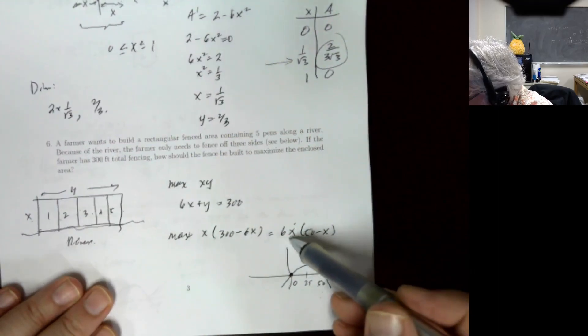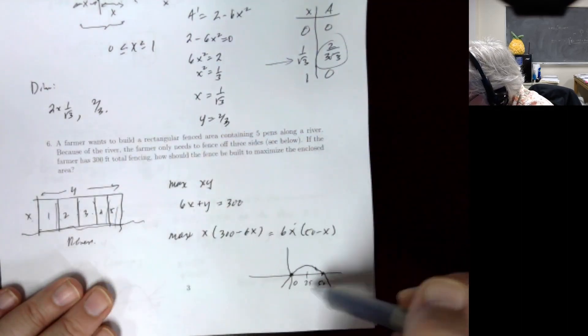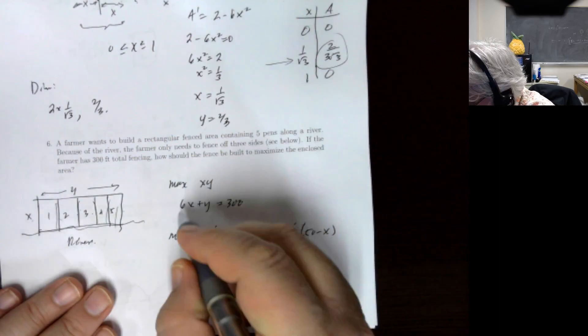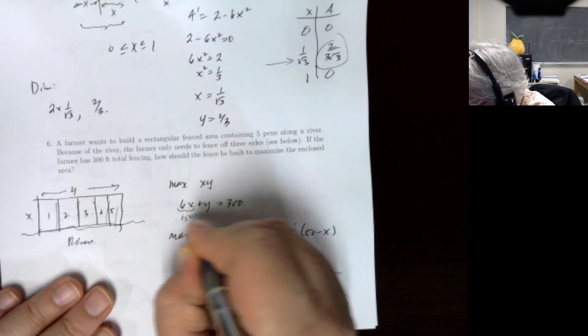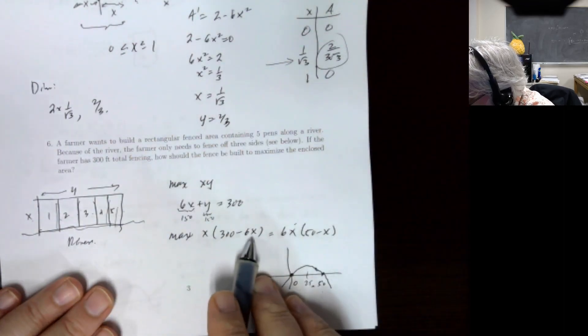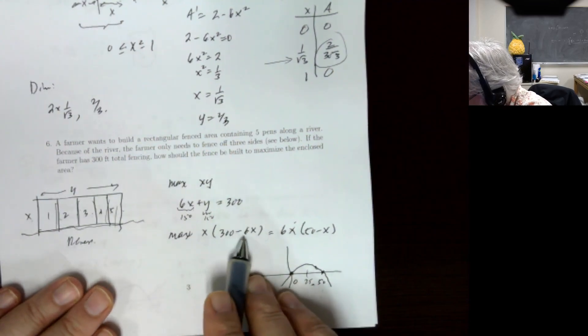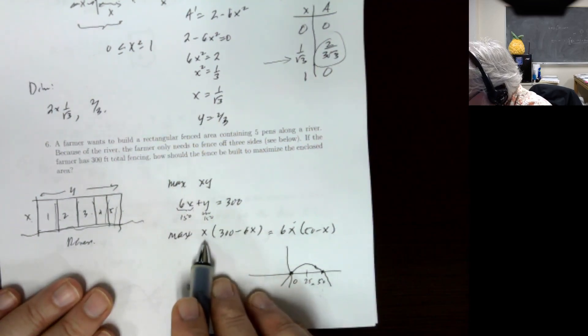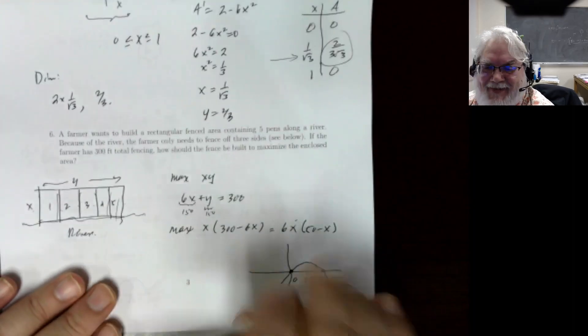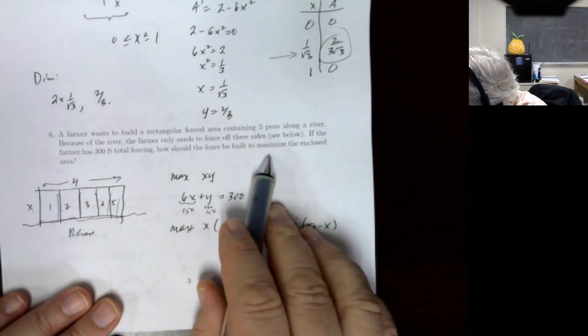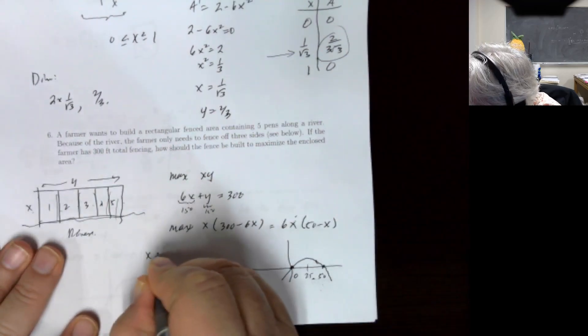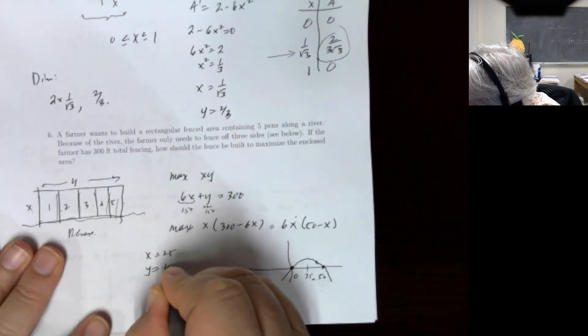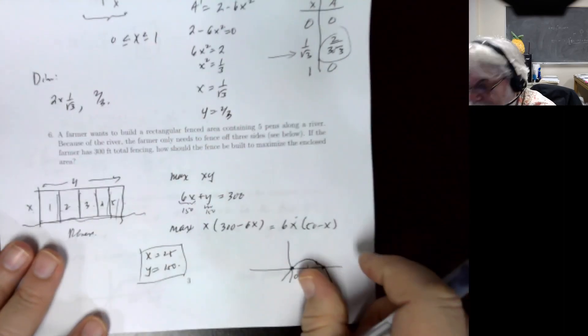Notice that 6 times 25 equals 150, so 150 feet of fencing goes to the x-direction and the remaining 150 goes to y. So y equals 150. The maximum area is 25 times 150. The dimensions of the rectangle are x equals 25 and y equals 150.